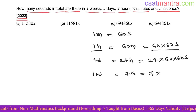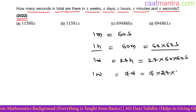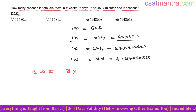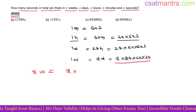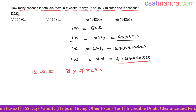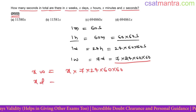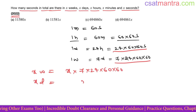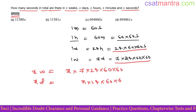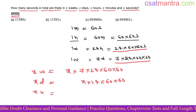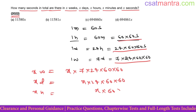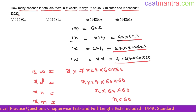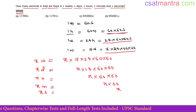One week has 7 days, so one day in seconds is 24 into 60 into 60. Now x weeks: one week has that many seconds, so x weeks would be 7 into 24 into 60 into 60. x days would be x into 24 into 60 into 60. x hours: 60 into 60. x minutes: x into 60. x seconds: x.